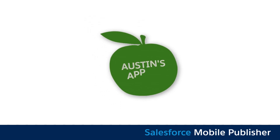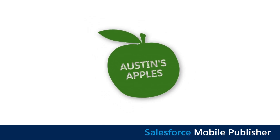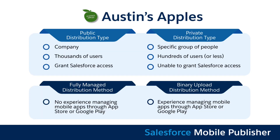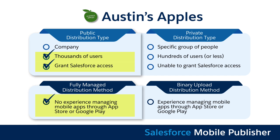Let's take the company Austin's Apples as an example. They have 1,000 users. The company grants Salesforce access to their app stores, but they don't have experience with app publishing through app stores. In this case, their best option would be to leverage public distribution type and the fully managed distribution method.